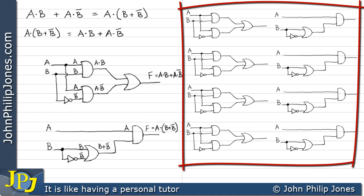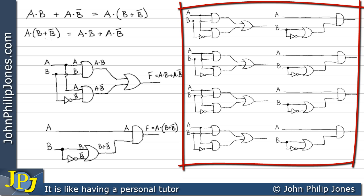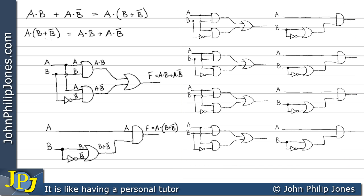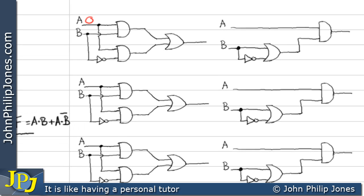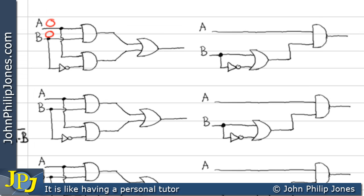We can see that I have drawn the combinational logic circuits out again, and I have four copies of each, because we have four possible input combinations. Starting off, we'll put a zero at A and also at B, and do the same for the other combinational logic circuit, so we can compare the outputs when both inputs are zero.